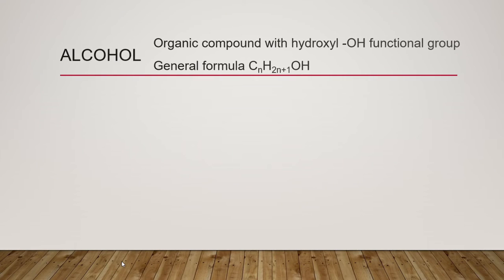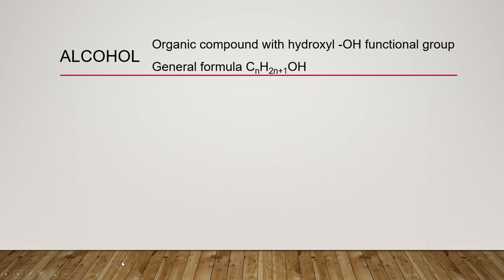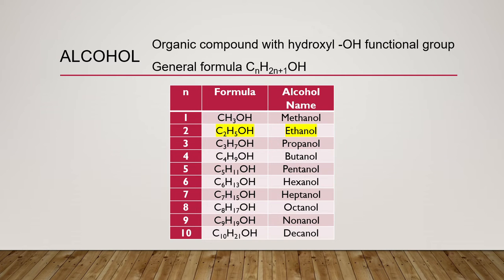In this lesson we will learn about alcohol, and mainly one of the widely used alcohols, also known as ethanol. Alcohols are organic compounds with a hydroxyl functional group. The general formula for alcohol is CₙH₂ₙ₊₁OH, where n can be 1, 2, 3, and so on. The symbol n represents the number of carbon atoms. The suffix of all members of the alcohol series is '-anol'.